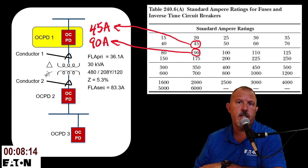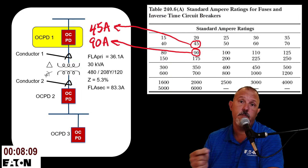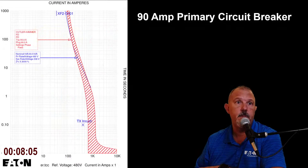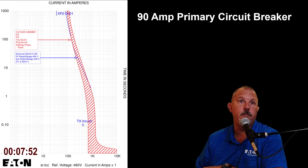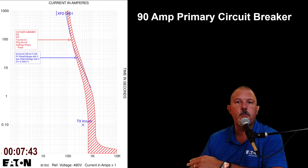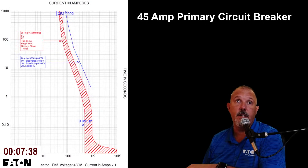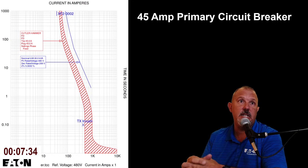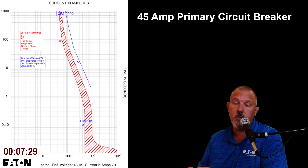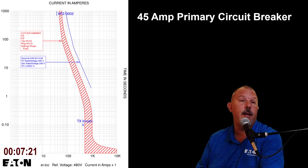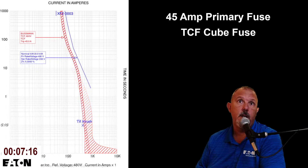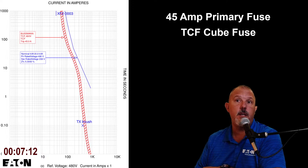Looking at the TCC plots: the FD90 primary circuit breaker shows the inrush current highlighted — the breaker won't trip on inrush, and the transformer damage curve sits well within the breaker's protection zone, providing good short-circuit protection. The 45-amp FD-type primary breaker also clears inrush without tripping and provides very good protection of the transformer damage curve — I'm comfortable with that plot.